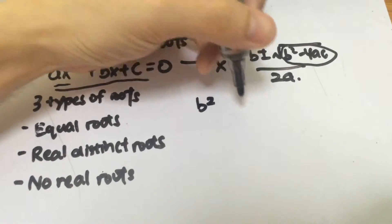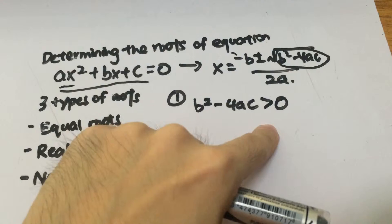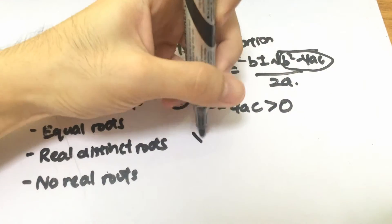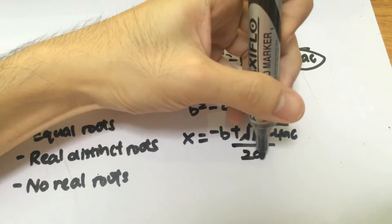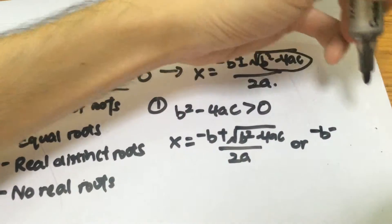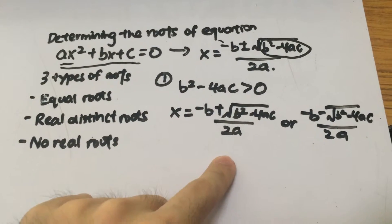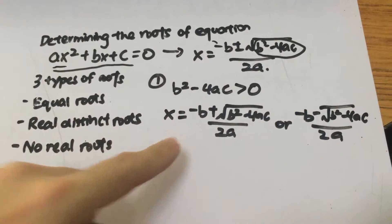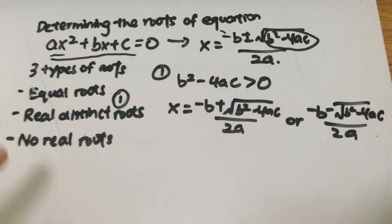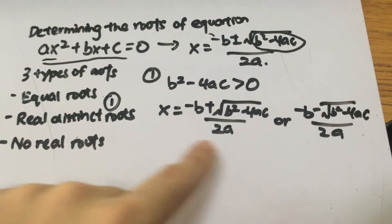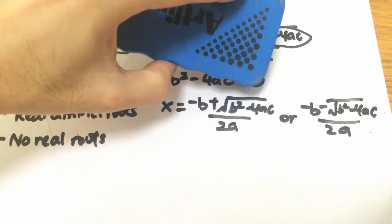So for the first scenario, if b squared minus 4ac is greater than 0, we do have a value inside the square root, and x will be either minus b plus square root of b squared minus 4ac over 2a, or minus b minus square root of b squared minus 4ac over 2a. This situation refers to real distinct roots. It's real because the roots actually exist, and distinct because you get two different solutions.